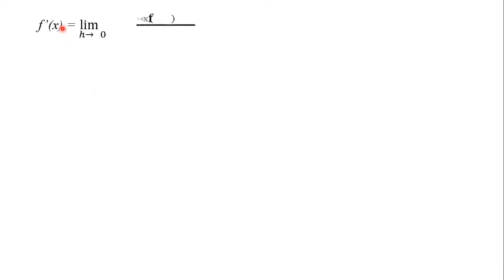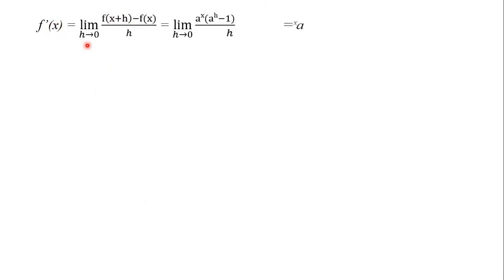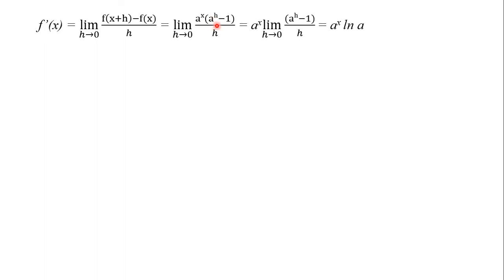The derivative f prime at x equals the limit of [a^(x+h) minus aˣ] over h as h approaches 0, which equals aˣ times the limit of (a^h minus 1) over h as h approaches 0. This limit equals ln a, so the derivative of aˣ is aˣ ln a.